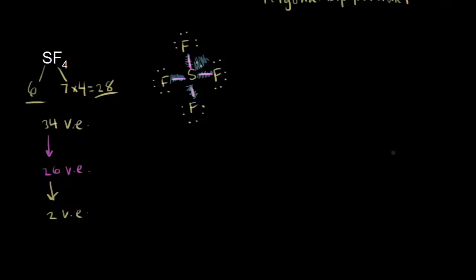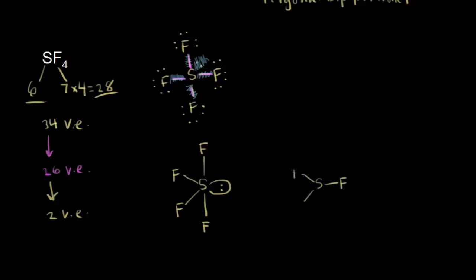With 5 electron clouds, they'll adopt a trigonal bipyramidal shape. Let's draw two possible versions of this structure. In the first version, the lone pair of electrons on sulfur is in the equatorial position, with two fluorines also equatorial and one fluorine axial above and one axial below. The other possibility is to put the lone pair of electrons in the axial position, with three equatorial fluorines and one axial fluorine.